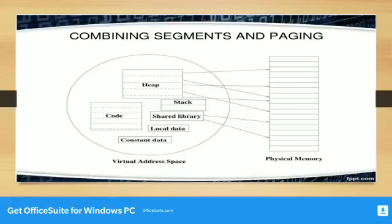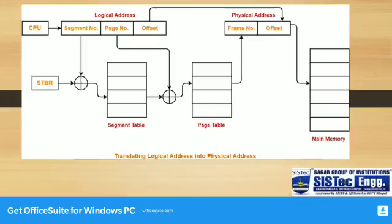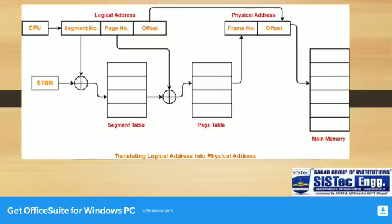A page table exists for each segment that keeps track of the frames storing the pages of that segment. Each page table occupies one frame in main memory, and the number of entries in the page table of a segment equals the number of pages that segment is divided into. A segment table exists that keeps track of the frame storing the page table of each segment, and the number of entries in the segment table equals the number of segments the process is divided into.